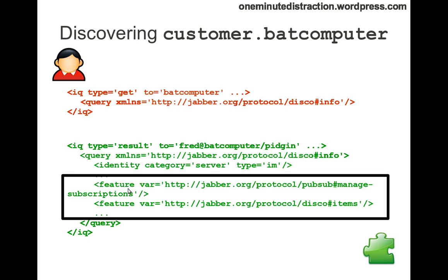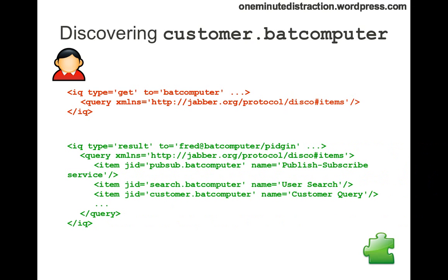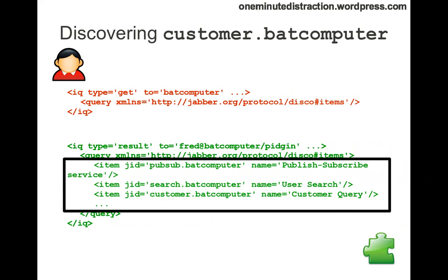As you can see, this particular computer hosts PubSub managed subscription, and it also has a feature called disco items — meaning the server is telling the client 'I have a list of services you can interrogate.' On seeing this, the client sends an IQ message with a disco items namespace to batcomputer. Batcomputer returns a result listing all the entities, represented as JIDs. For example, pubsub.badcomputer for publish-subscribe, search.badcomputer for user search, and in our case, customer.badcomputer for customer queries.